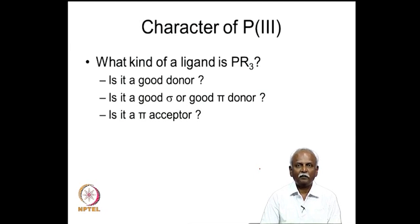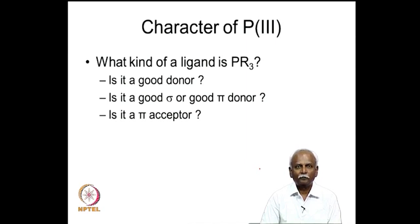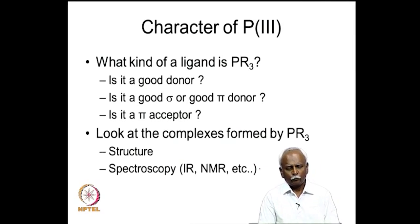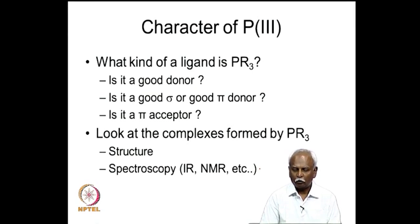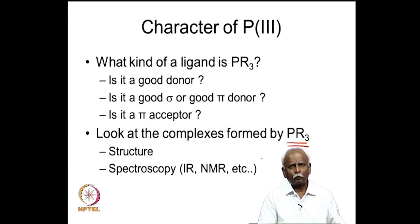Phosphorous(III) ligands can be readily synthesized with a variety of R groups. The question arises: what kind of ligand is PR3? Is it a good sigma donor or is it a pi donor? One can also ask whether it is a pi acceptor. By looking at complexes formed by triphenylphosphine, trialkylphosphine, and related ligands, one can understand from structure and spectroscopy what kind of donor we are dealing with.